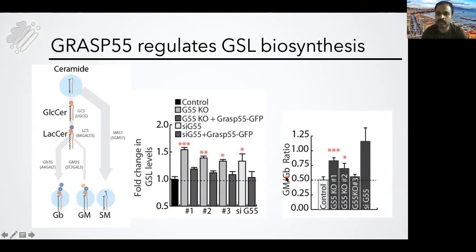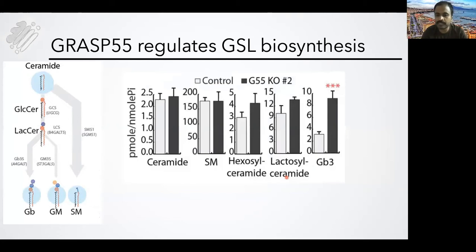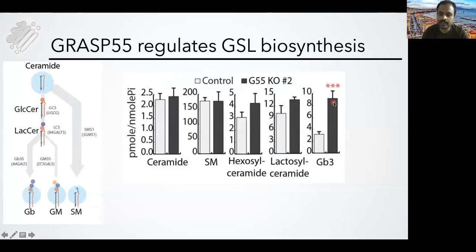We also confirmed the same increased glycosphingolipids by mass spectrometry. There were about three to four times more production levels of Gb3 in these knockout cells.